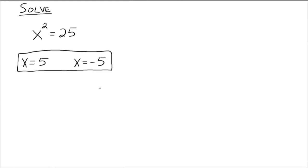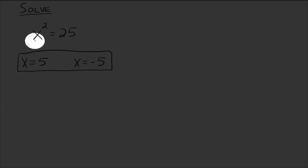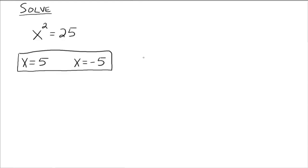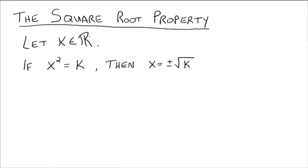So here's the idea of the square root property. We view this as something squared equals a number. Here's the definition — the square root property: if we let k be any real number, then if we have something squared equals a real number, we can take the square root of both sides. The square root of x squared is just x on the left side, and you get the square root of k on the right side. But whenever we take the square root of both sides, we have to remember to put the plus or minus sign in to account for the two solutions.